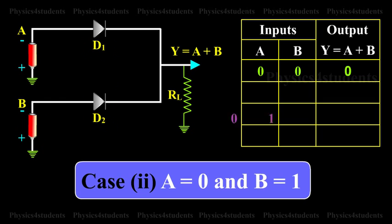Case 2: A is equal to 0 and B is equal to 1. When A is low and B is high, diode D2 is forward biased so that current flows through RL and output is high.